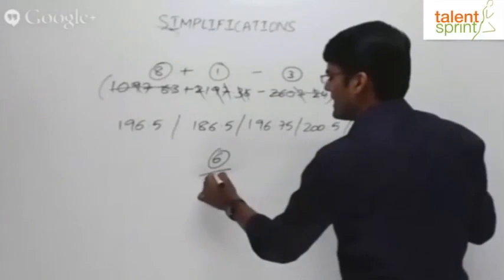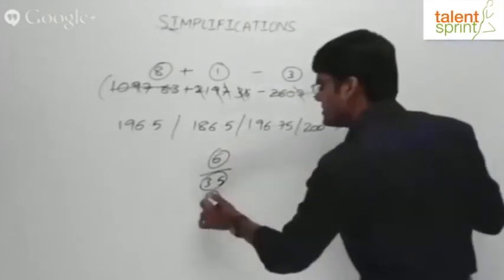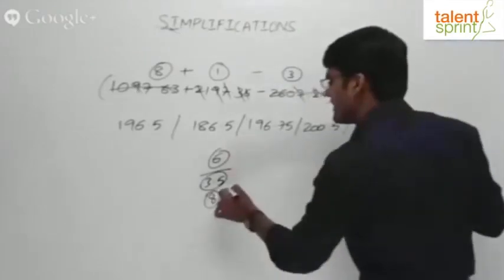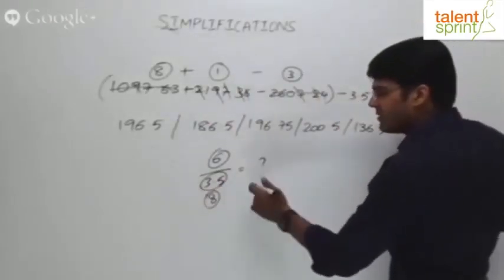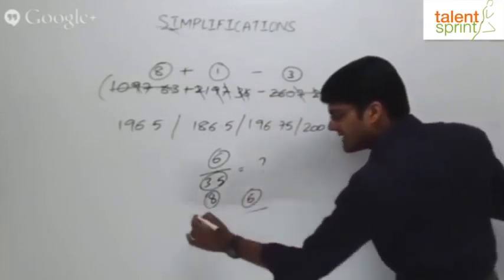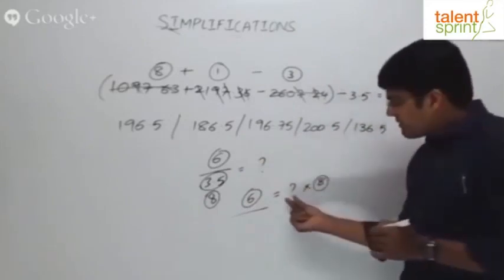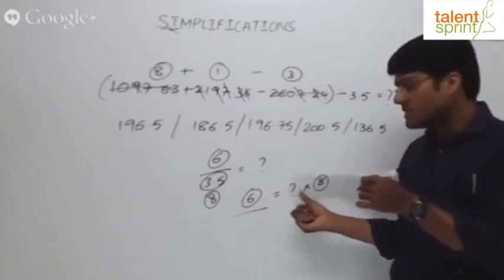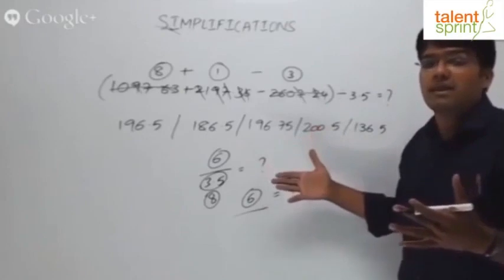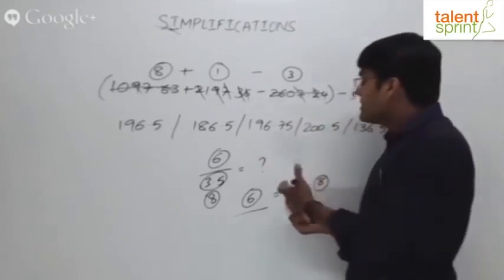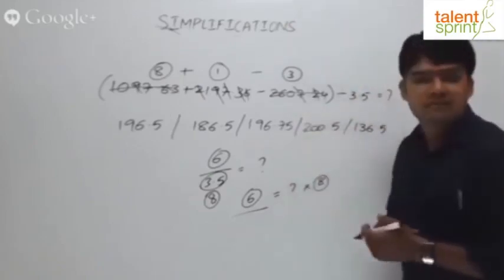Don't simplify the root-digit fraction directly. Instead, rearrange: 6 divided by root-digit 8 means the question mark's root-digit times 8 should equal root-digit 6. Substitute the options — find which option's root-digit, when multiplied by 8, gives a root-digit of 6. That will be the correct answer, or at least narrow down the options.